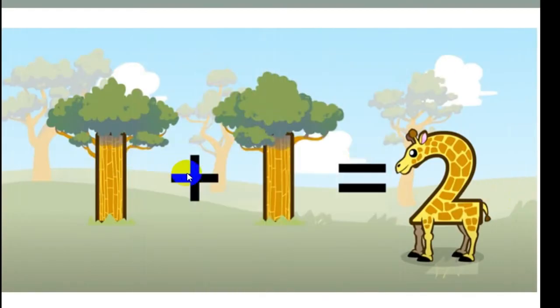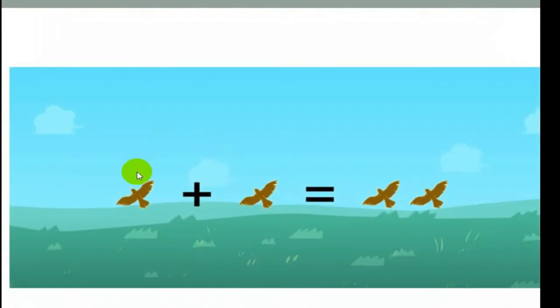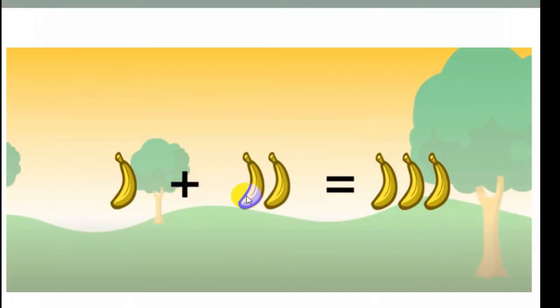1 plus 1 equals 2. 1 plus 2 equals 3. 1 banana plus 2 bananas equals 3 bananas. 1 plus 2 equals 3.